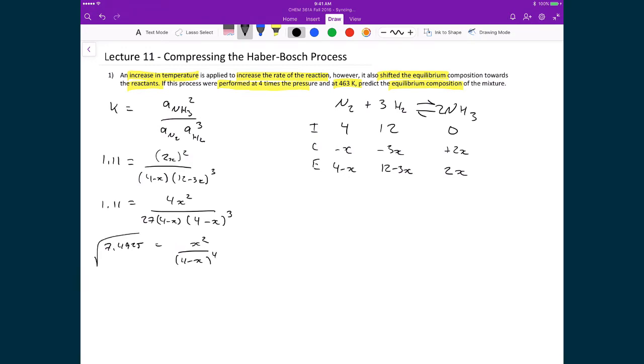And so what I'll do at this point is I'll take the square root of both sides. That leaves me with 2.737 is equal to x over 4 minus x all squared.